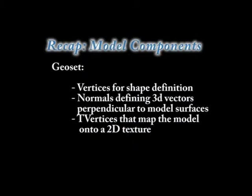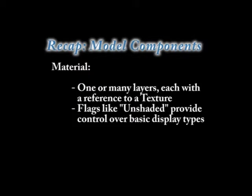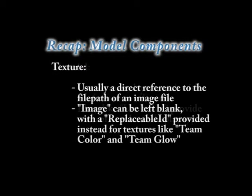Just for good luck, let's recap what you learned today. Geosets have vertices that define their shape. They have normals that are 3D vectors perpendicular to model surfaces that define how light affects the model. And T vertices that map the model onto a 2D texture. A material is the surface of a geoset — it consists of one or many layers, each with a reference to a texture. Flags like unshaded provide control over basic display types. Textures are typically assigned to the material and are a direct reference to the file path of an image file. The image field on a texture can be left blank, with a replaceable ID provided instead for textures like team color or team glow.